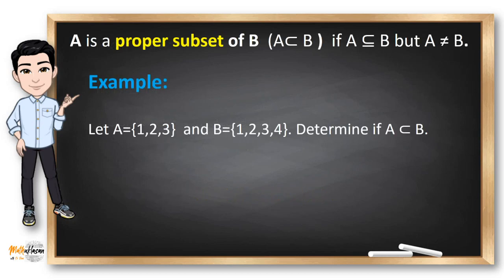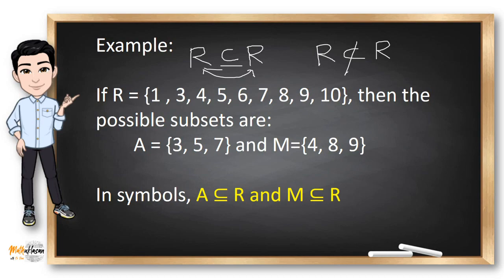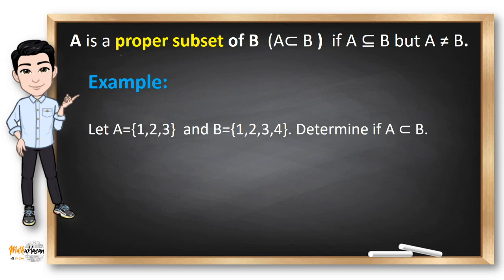But how about proper subset? A is a proper subset of B, denoted by this symbol, if A is a subset of B but A is not equal to B. In the previous example, we can say that R is a subset of R. But in a proper subset, since these are the same sets and they are equal, we cannot use proper subset. So R is not a proper subset of R. That's the main difference between subset and proper subset.